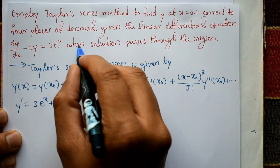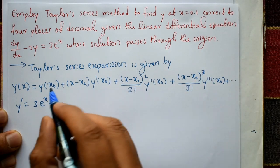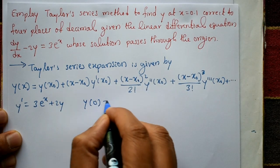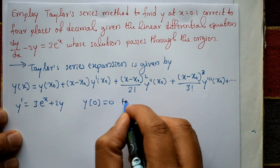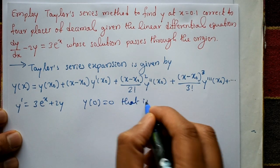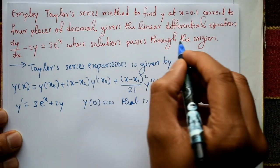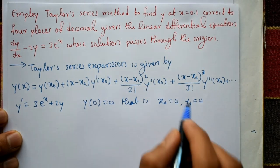The initial condition whose solution passes through the origin means x and y are 0. That is y(0) = 0. The x and y values are x₀ = 0 and y₀ = 0. Passes through the origin means x and y values are 0.